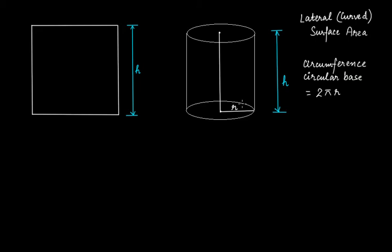The circumference means the length of this boundary of this circle. Therefore, when you cut this cylinder and open it, and it takes the shape of a rectangle, if this is the boundary of this circle, when you open it, don't you think that this length will also be equal to 2πr? Because the circumference of the circle is 2πr — that is the length of this boundary. So when you open this, this length is actually the circular base. So now we have this rectangular sheet whose width is h and the length is 2πr.